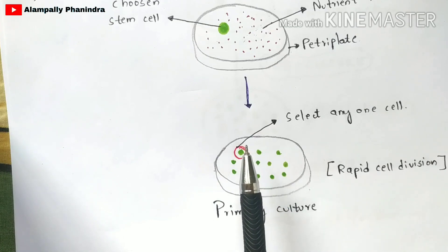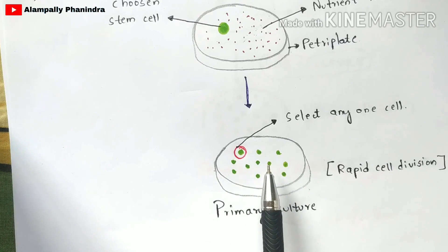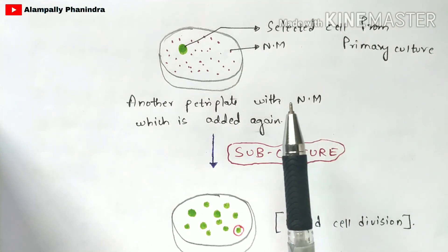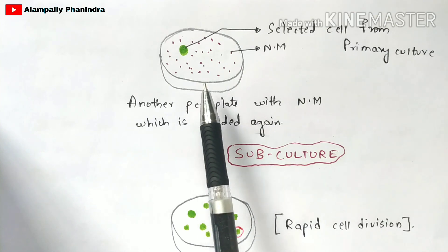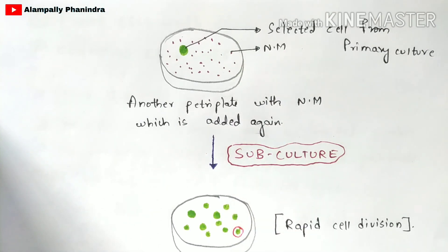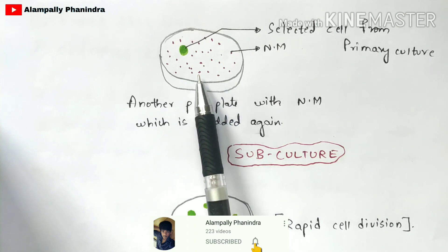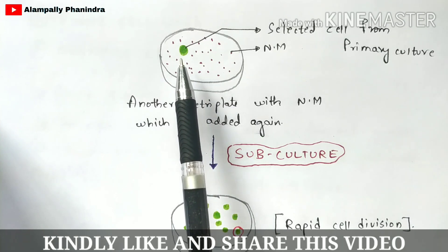From this primary culture, you are going to select one particular stem cell. You can select any cell from the total culture, but you choose only one. On the other hand, you take another petri plate and add fresh nutrient medium — containing carbohydrates, proteins, vitamins, growth factors, antibiotics, and peptides — and place the selected cell from the primary culture into this new petri plate.